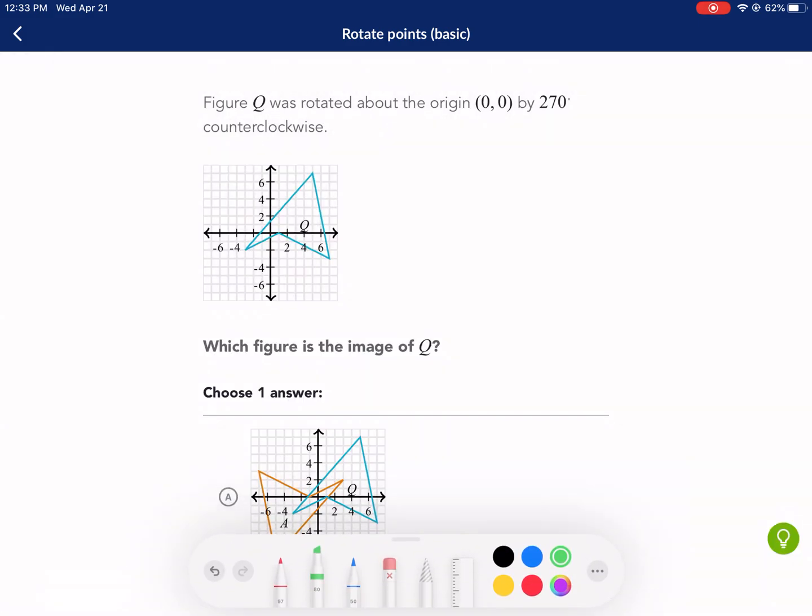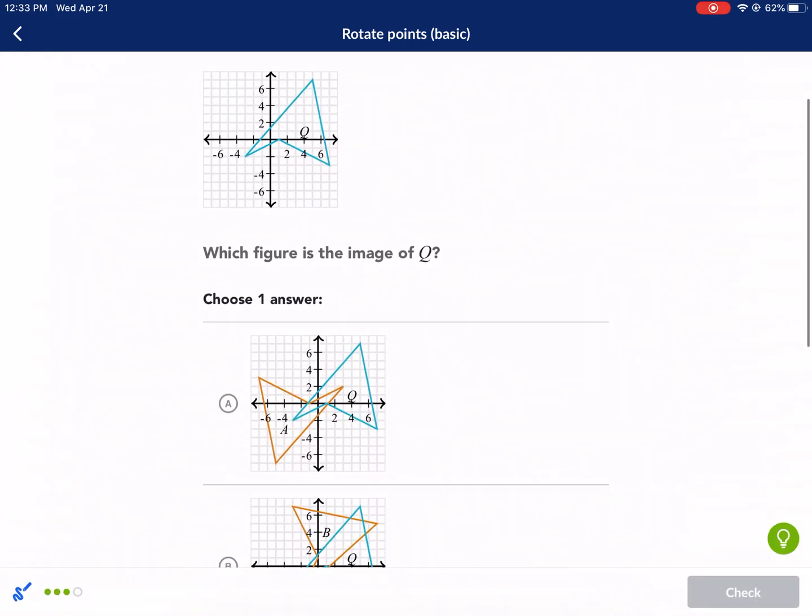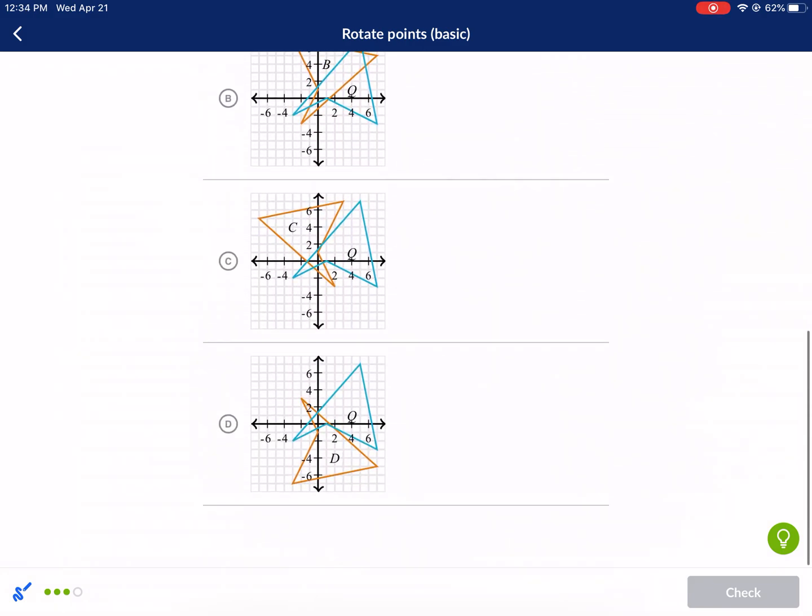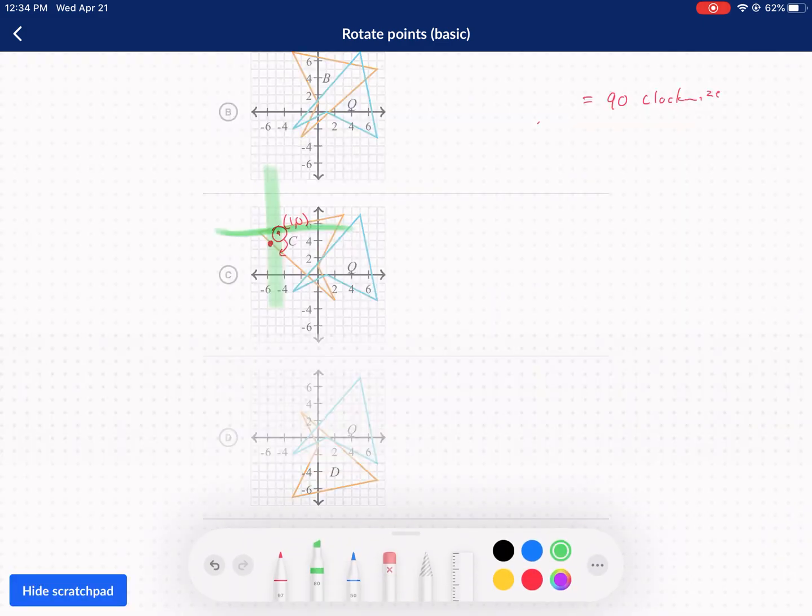So I need my little bump, this little bump in there to be on the y-axis below. That one's not, that one's not, that one's not. This one is.